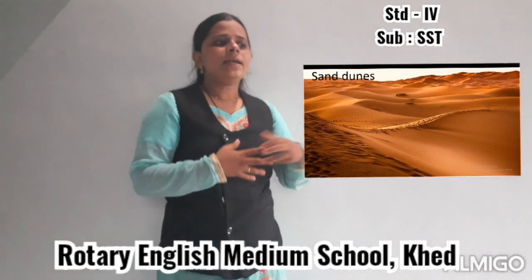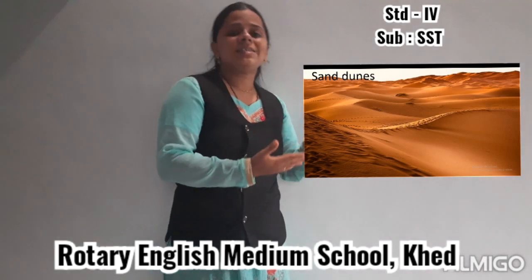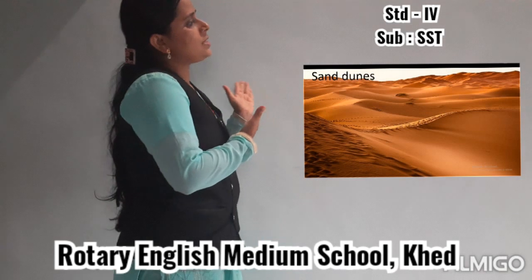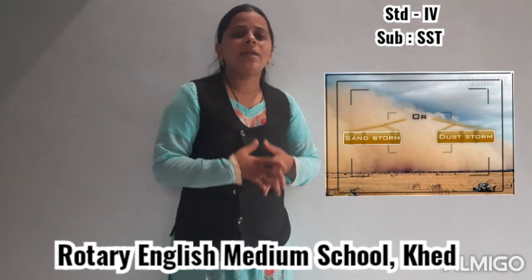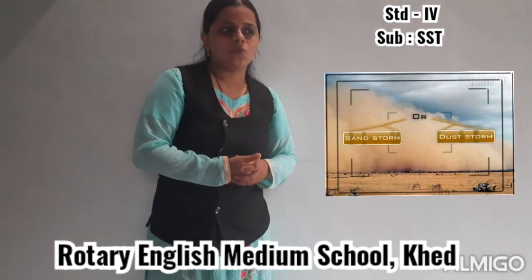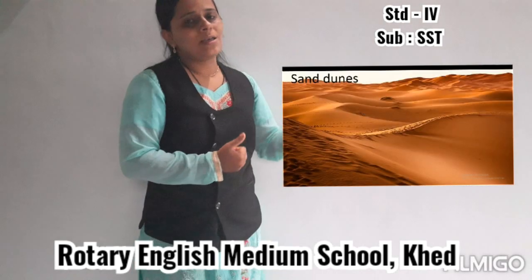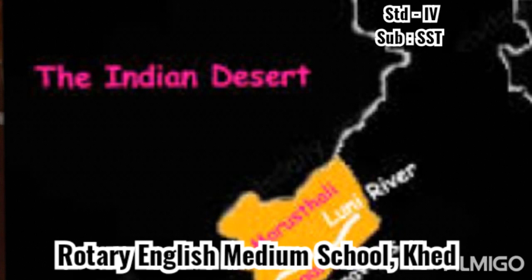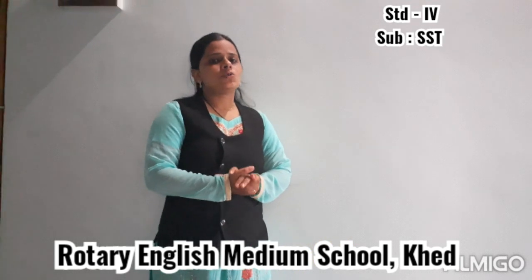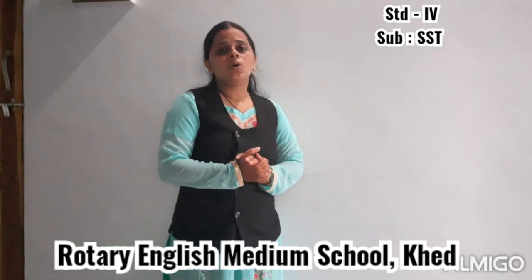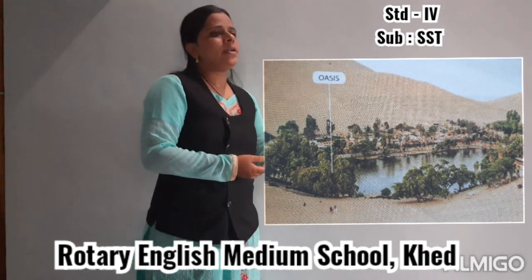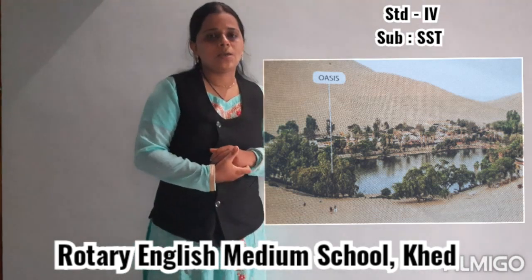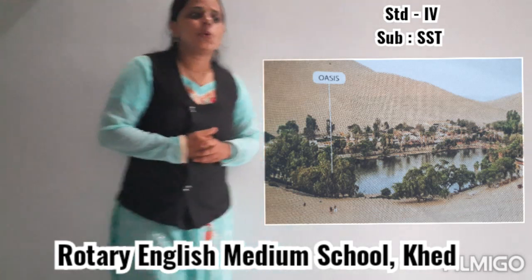If you are in the sand dunes, you will see there is a strong wind — we can call it a sand storm. Anyone can easily get lost in the sand dunes. Here, the Luni is the only major river which flows in this part. Later we will discuss about the oasis. What is this oasis? At some places in the desert, underground water comes out through the surface through a spring — that is known as oasis.